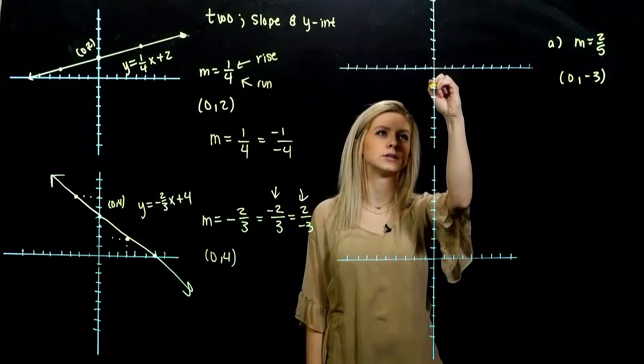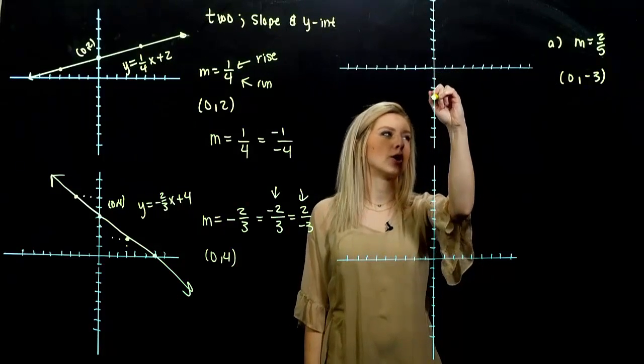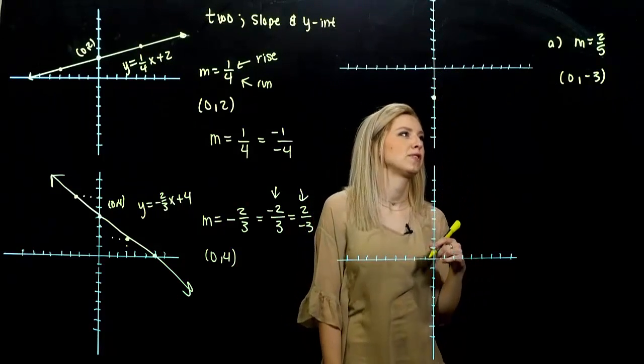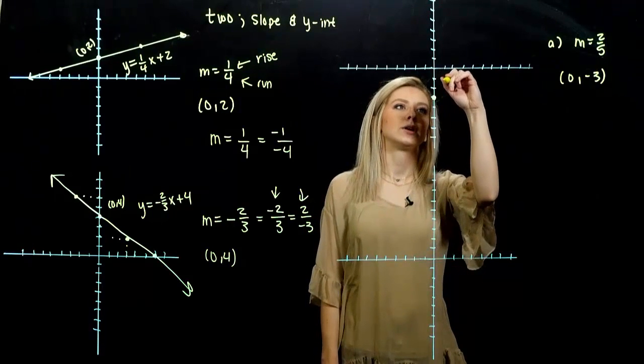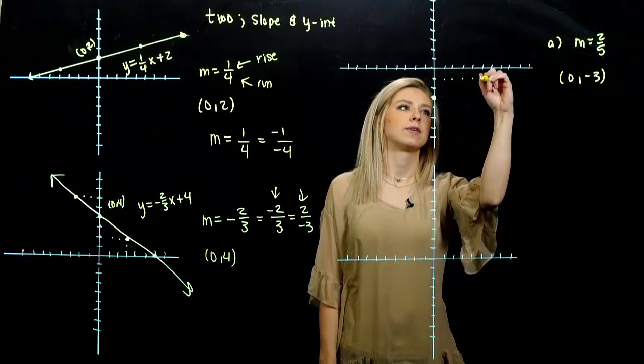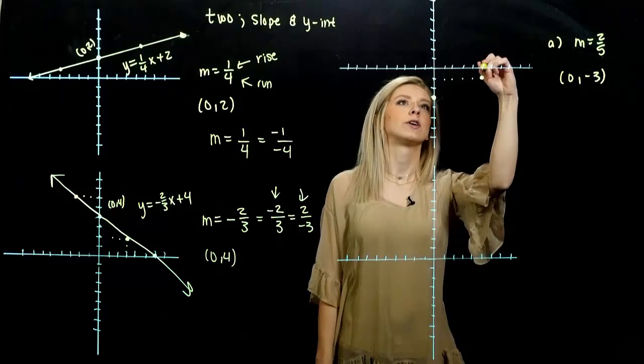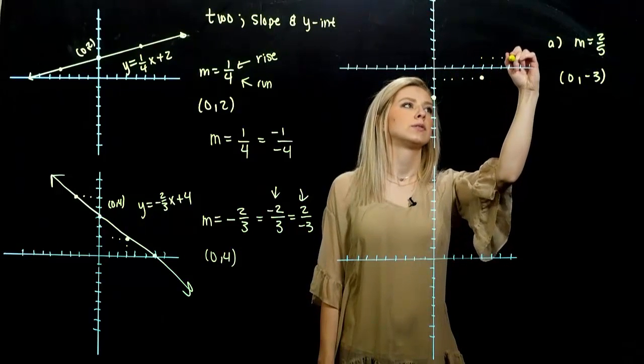What's it looking like? We graph our point first, where I know the line is going to go through. And from there, I'm moving according to my slope, rising two, running one, two, three, four, five. Rise two, one, two, three, four, five, just to get a good idea what the picture looks like.